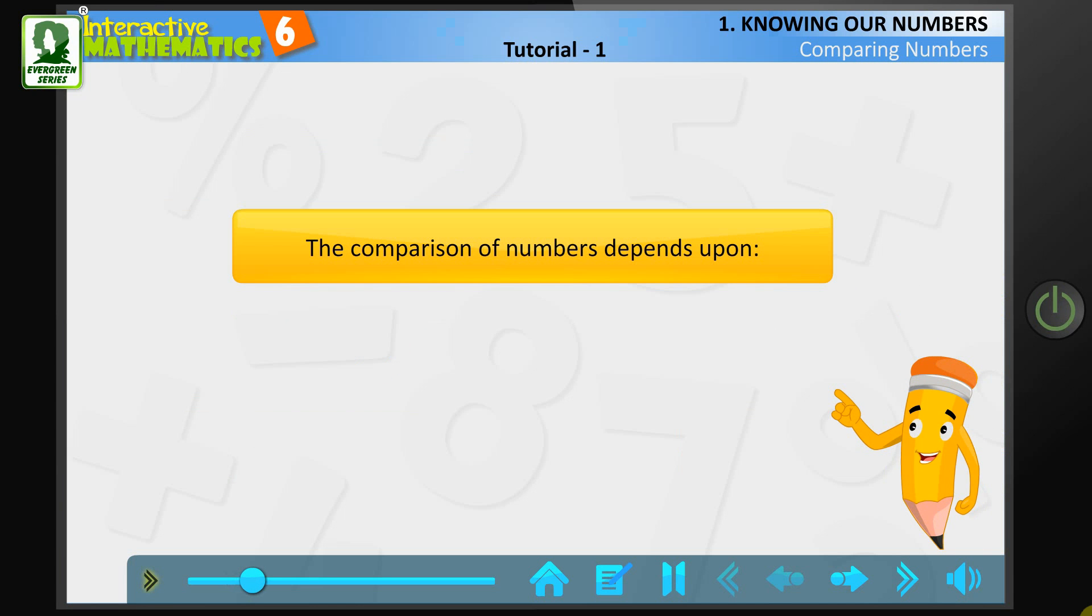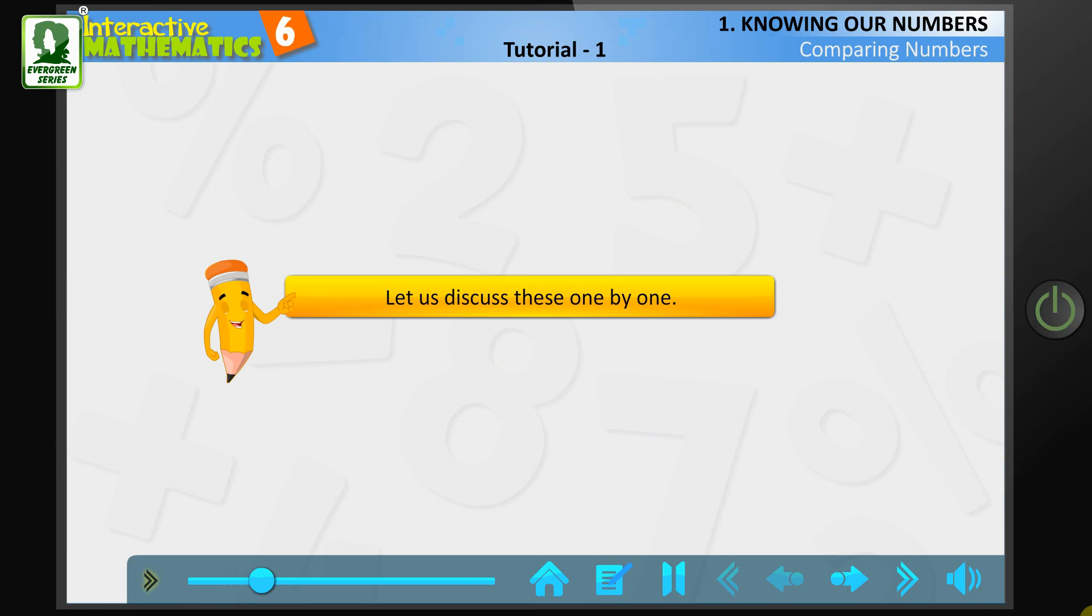The comparison of numbers depends upon two things: number of digits and place value of digits. Let us discuss these one by one.